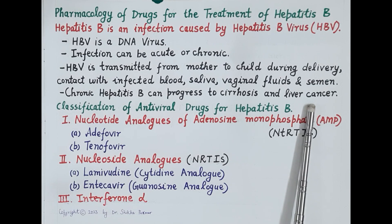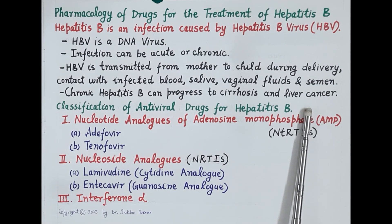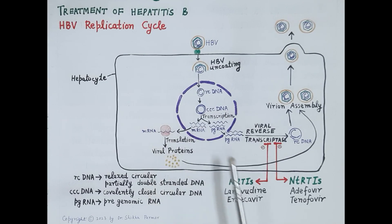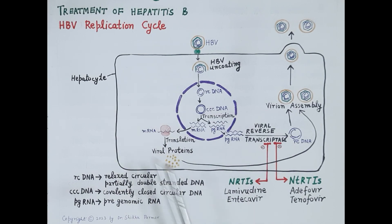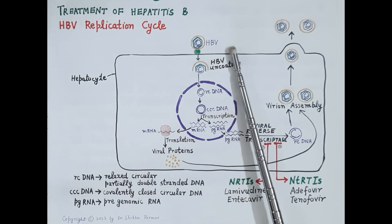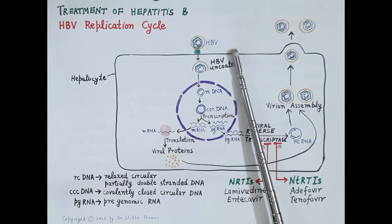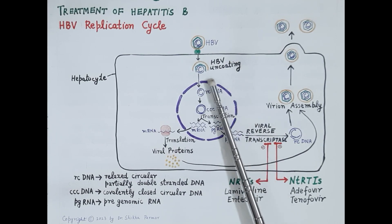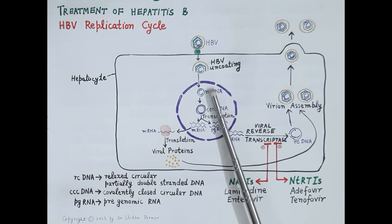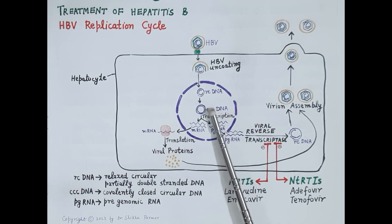In order to understand pharmacology of drugs used to treat hepatitis B, it is essential to understand the replication cycle of hepatitis B virus. Look at this figure — it explains the replication cycle. This is a liver cell or hepatocyte, and this is the hepatitis B virus. The virus attaches itself to receptors on the liver cell and enters by the process of endocytosis. The virus then uncoats itself and viral DNA is released.